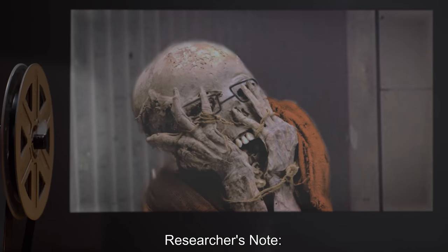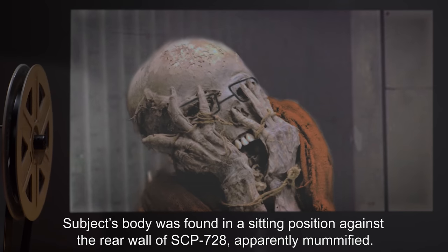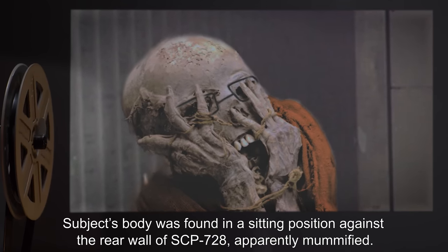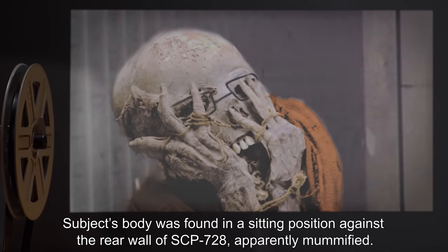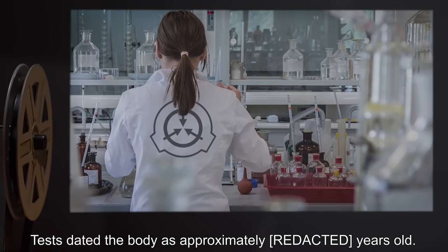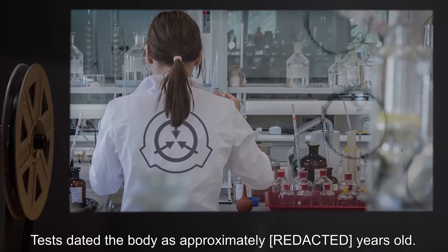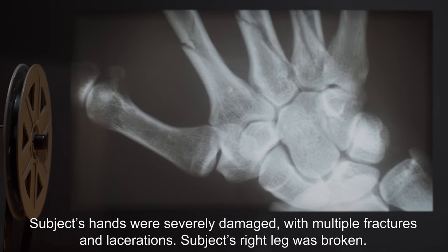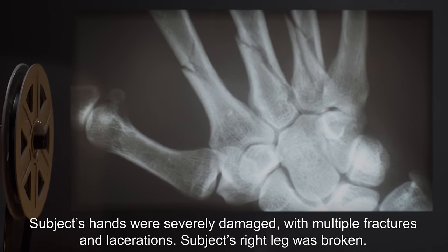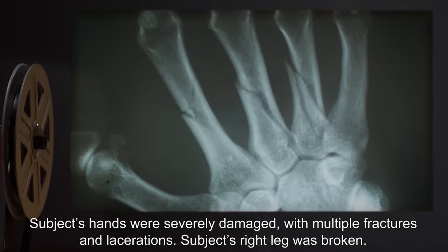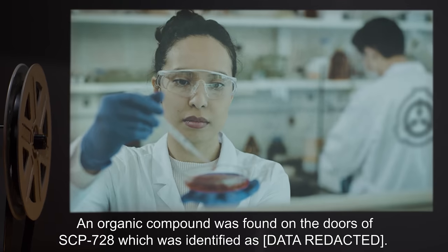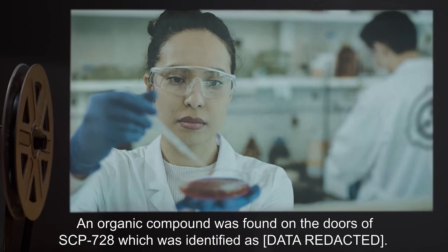Researcher's note: Subject's body was found in a sitting position against the rear wall of SCP-728, apparently mummified. Tests dated the body as approximately 10 years old. Subject's hands were severely damaged, with multiple fractures and lacerations. Subject's right leg was broken. An organic compound was found on the doors of SCP-728, which was identified as blood.